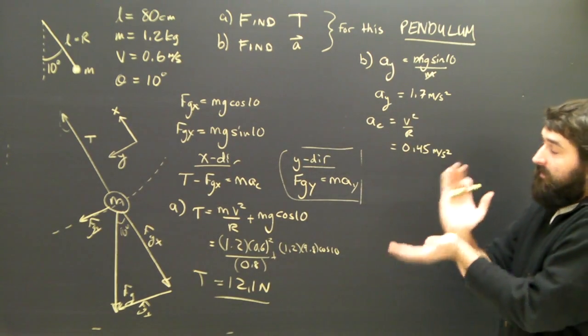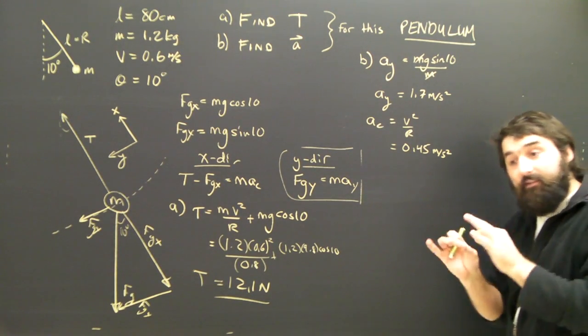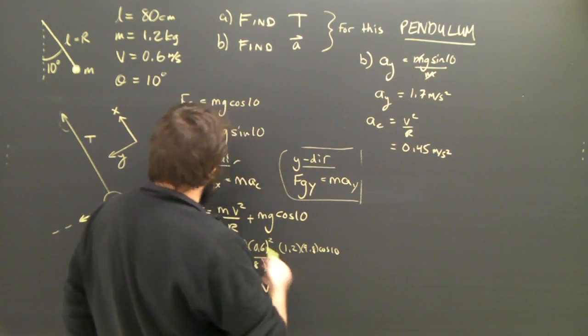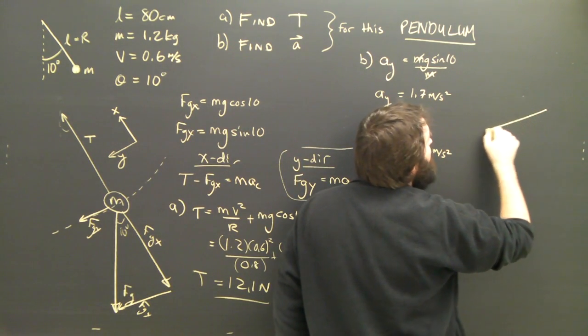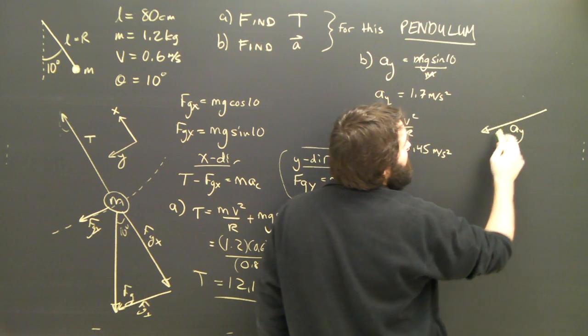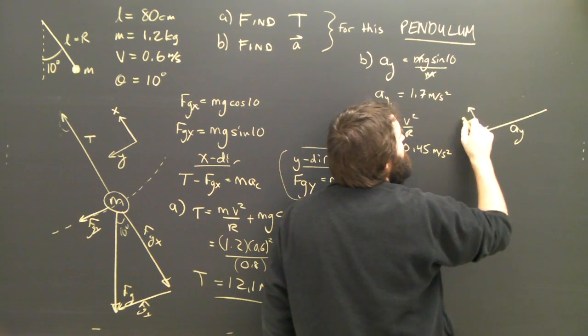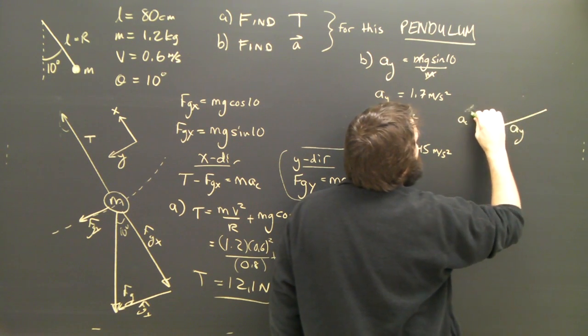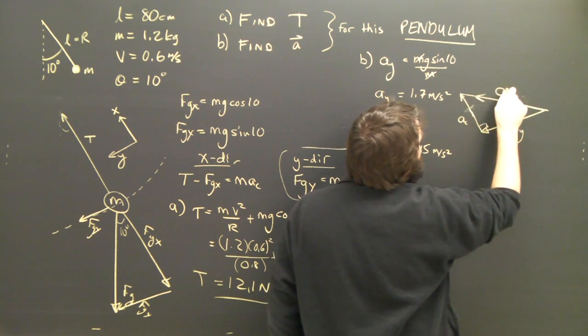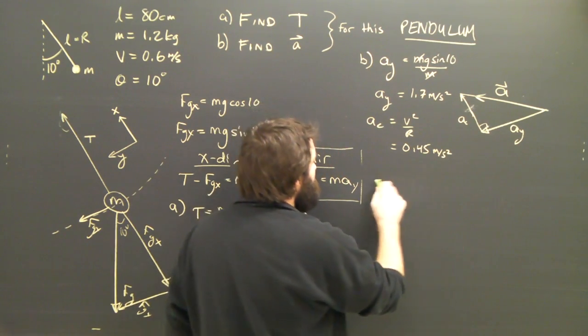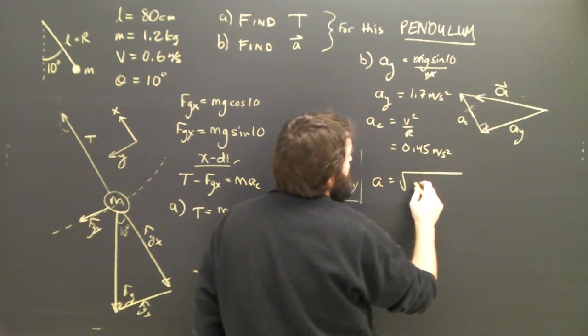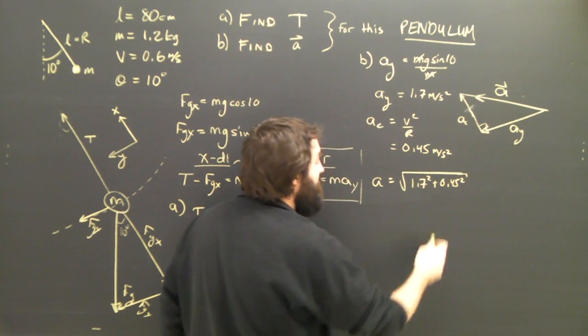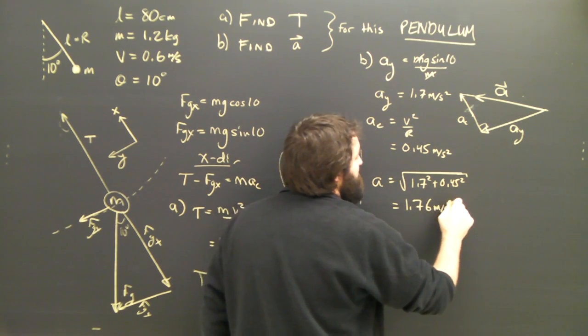So we've got these two components of acceleration. We need to put them together. You know how to do that. That's easy. Put the components together using the Pythagorean theorem, of course. I'll make a little diagram to help myself understand. I've got the acceleration in the y direction, and I've got this centripetal acceleration, and those two are going to give me the total acceleration, a. A will, of course, be the square root of 1.7 squared plus 0.45 squared, which comes out to be 1.76 meters per second squared.